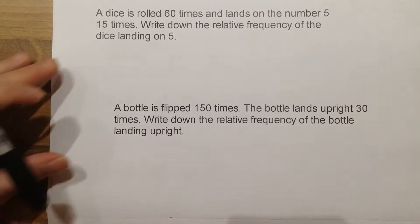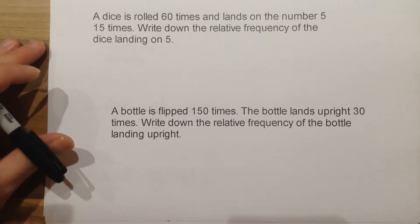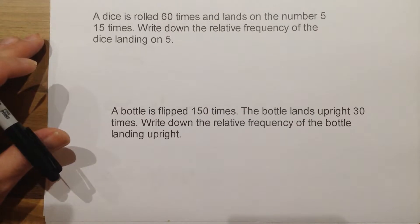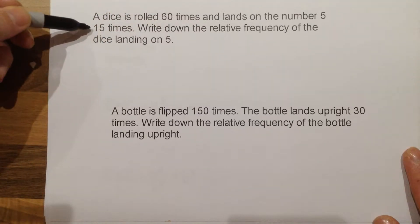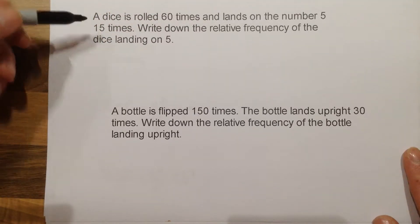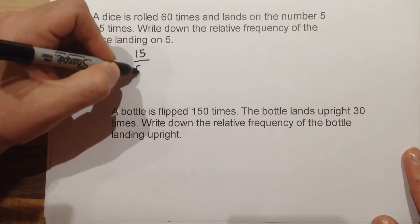Relative frequency is the next topic. For this, the relative frequency of something happening is simply how many times it happens out of how many times an event has taken place. So if a dice is rolled 60 times and lands on a particular number 15 times, its relative frequency is simply 15 over 60.